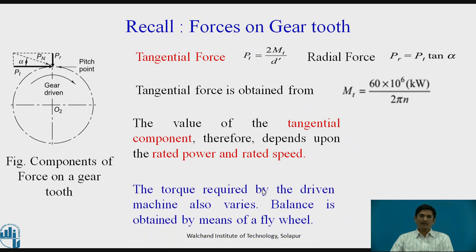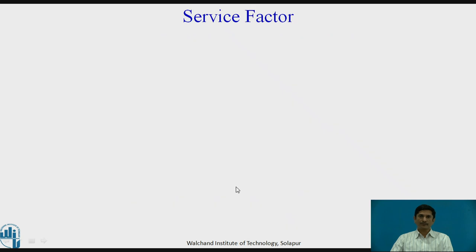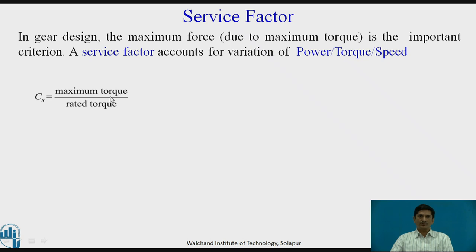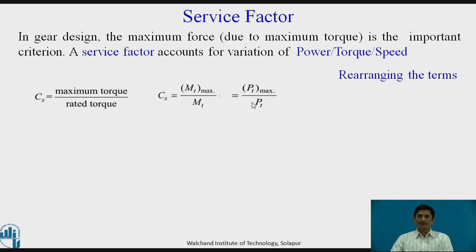The torque required by the driven machine also varies. Sometimes the balance is obtained by means of a flywheel. The service factor: in gear design, the maximum force due to the maximum torque is the important criteria. A service factor accounts for variation of power, torque or speed. The service factor Cs is given as maximum torque upon rated torque, also expressed as MT max upon MT. It can also be mentioned as PT max upon PT. Rearranging these terms, we get PT max, i.e. maximum tangential force, equals CS × PT.